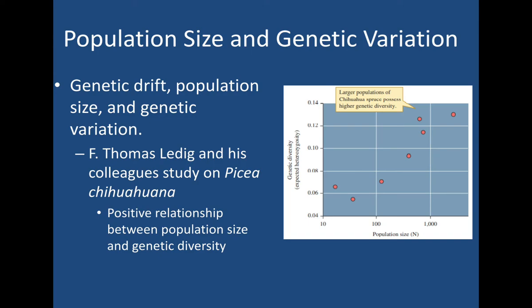Contrast that with a beetle population of 100,000, with 10,000 of them being red beetles. It's much more likely that some of these red beetles will survive the storm, since there's so many. So that shows you how larger populations are more resistant to genetic variation loss.